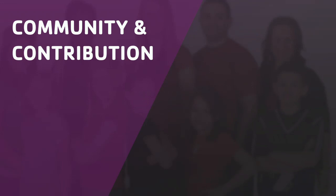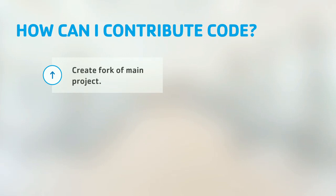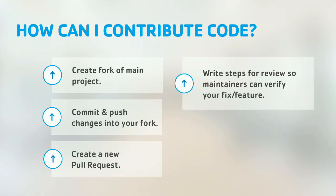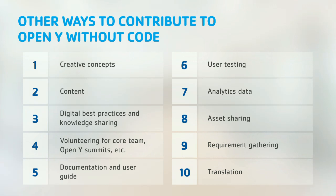Our next focus is building the community and involving contributors. Without community a product will not survive — and that means not just the YMCA community contributing to the project, but also support from the Drupal community. Contributing is straightforward: fork the main project on GitHub, find an issue or documentation to contribute, create a pull request with review steps, and ask maintainers to review and merge. You'll also get credits on Drupal.org.